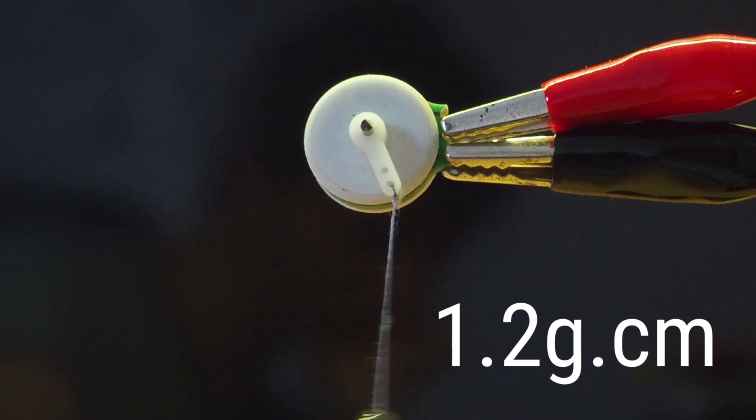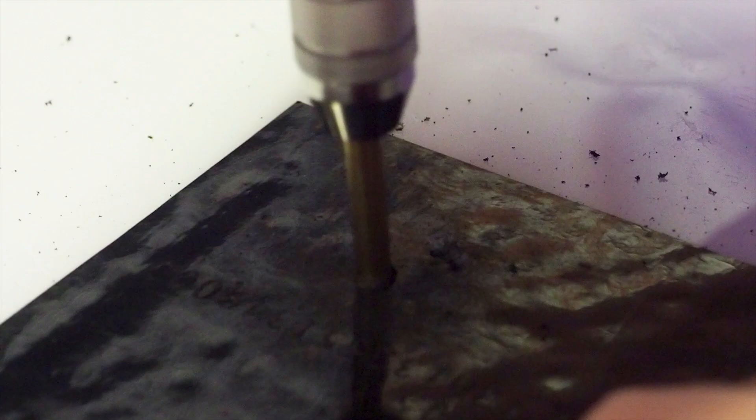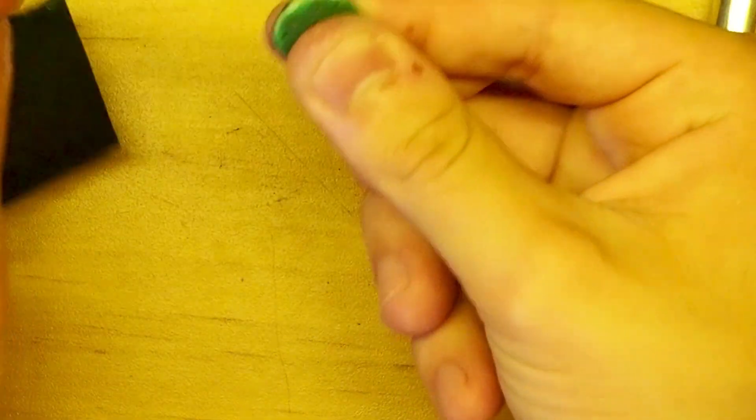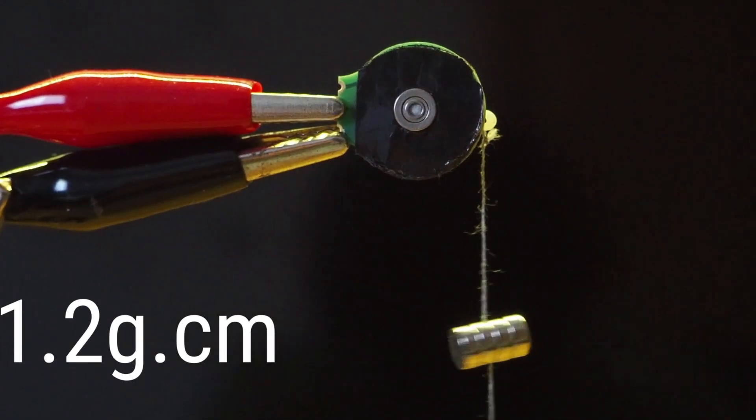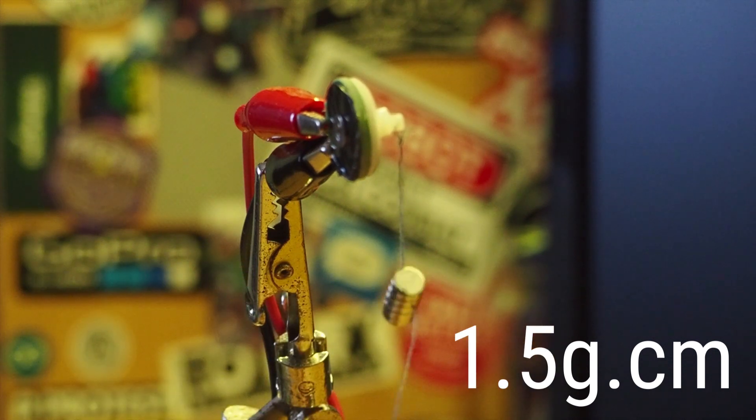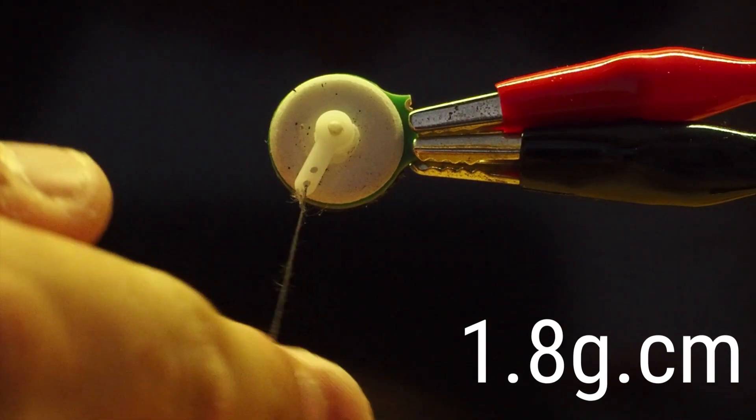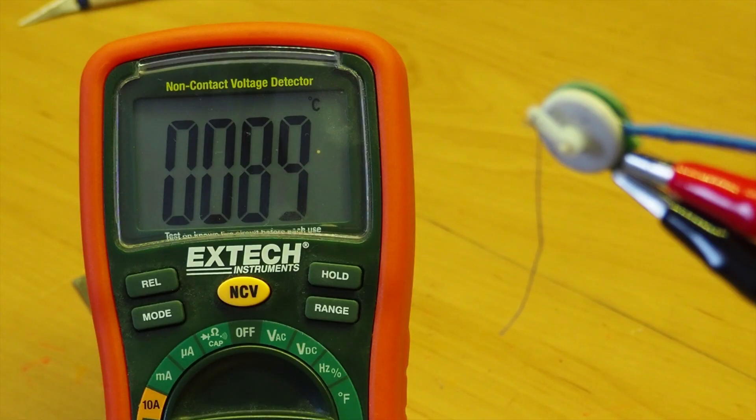My second option was to use ferrite to act as the core of the motor. This increased the torque from 0.9 to 1.5 gram centimeters. However, due to current losses, this also increased the temperature from 70 to 90 degrees Celsius.